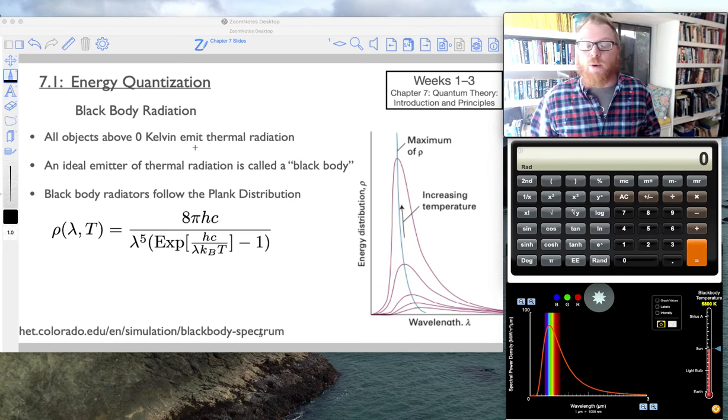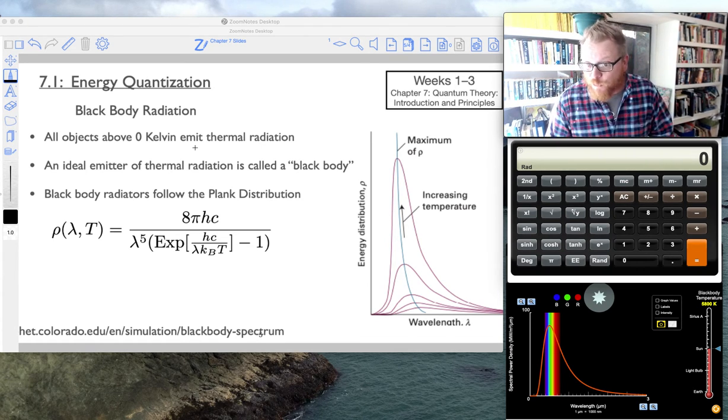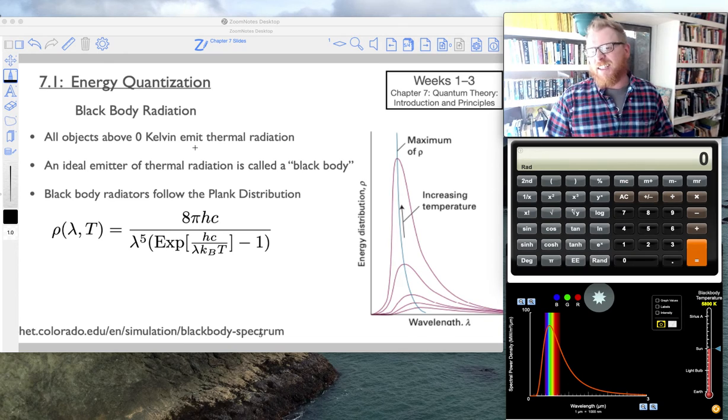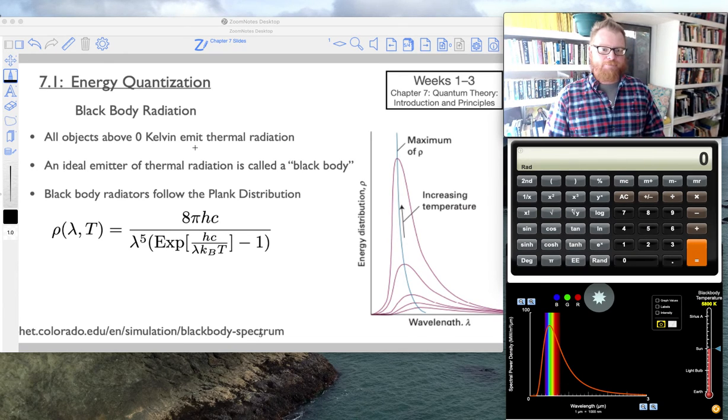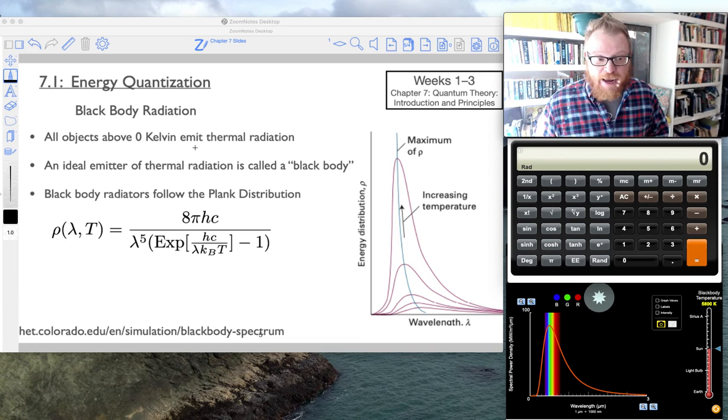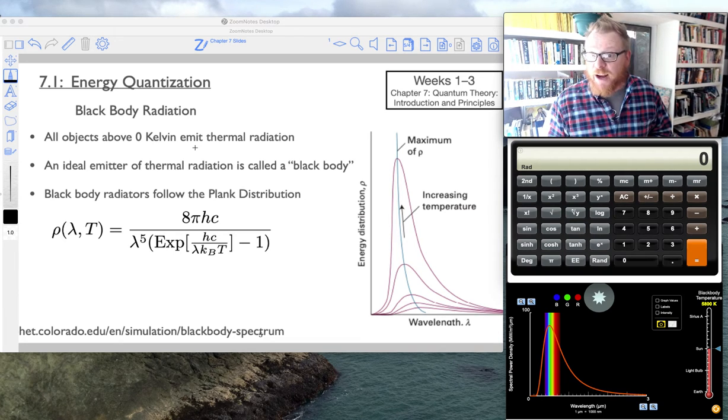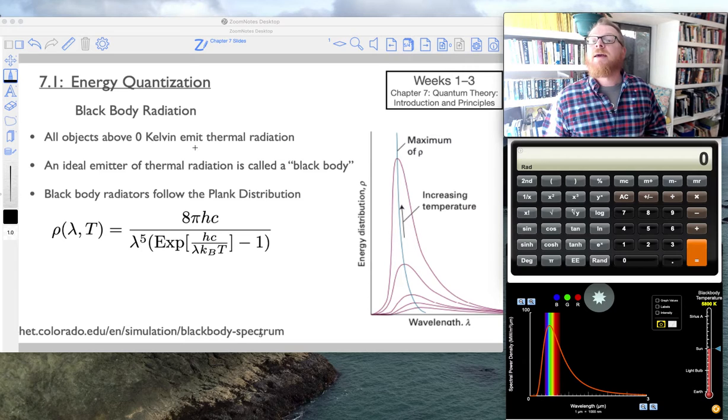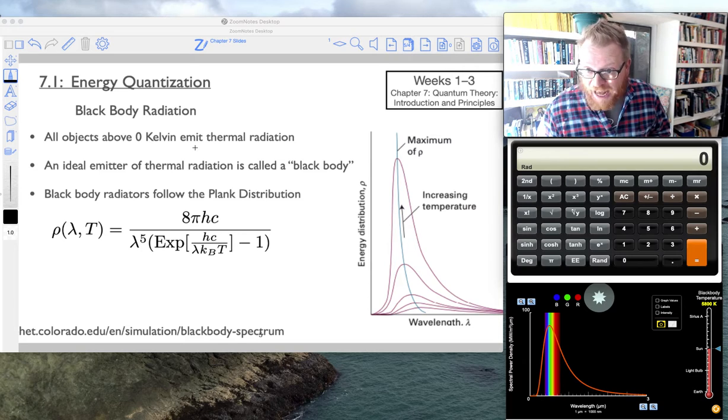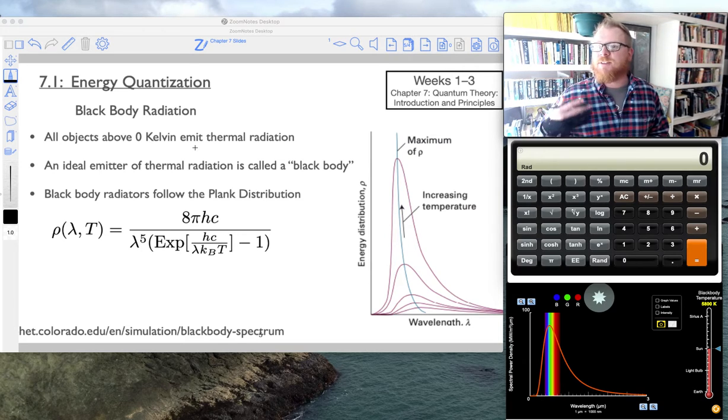That thermal radiation just so happens to be infrared for an object that's about 300 Kelvin. As we increase the temperature of that object, the type of radiation that object will emit becomes more energetic as the object becomes hotter.